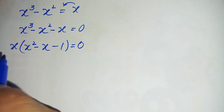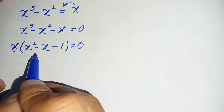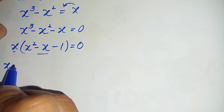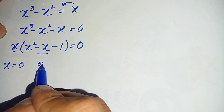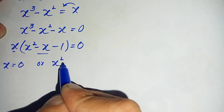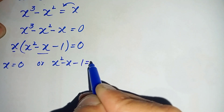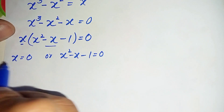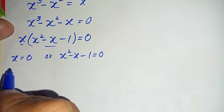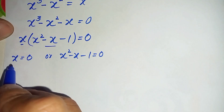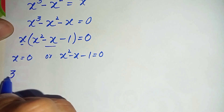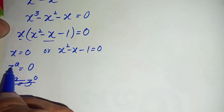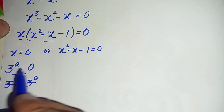The product of this expression is 0, so either x equals 0 or the quadratic factor equals 0: x is equal to 0 or x squared minus x minus 1 is equal to 0. For x equals 0, since x equals 3 raised to power a, we replace it as 3 raised to power a equals 0. The solution of this equation does not exist, so we reject it.